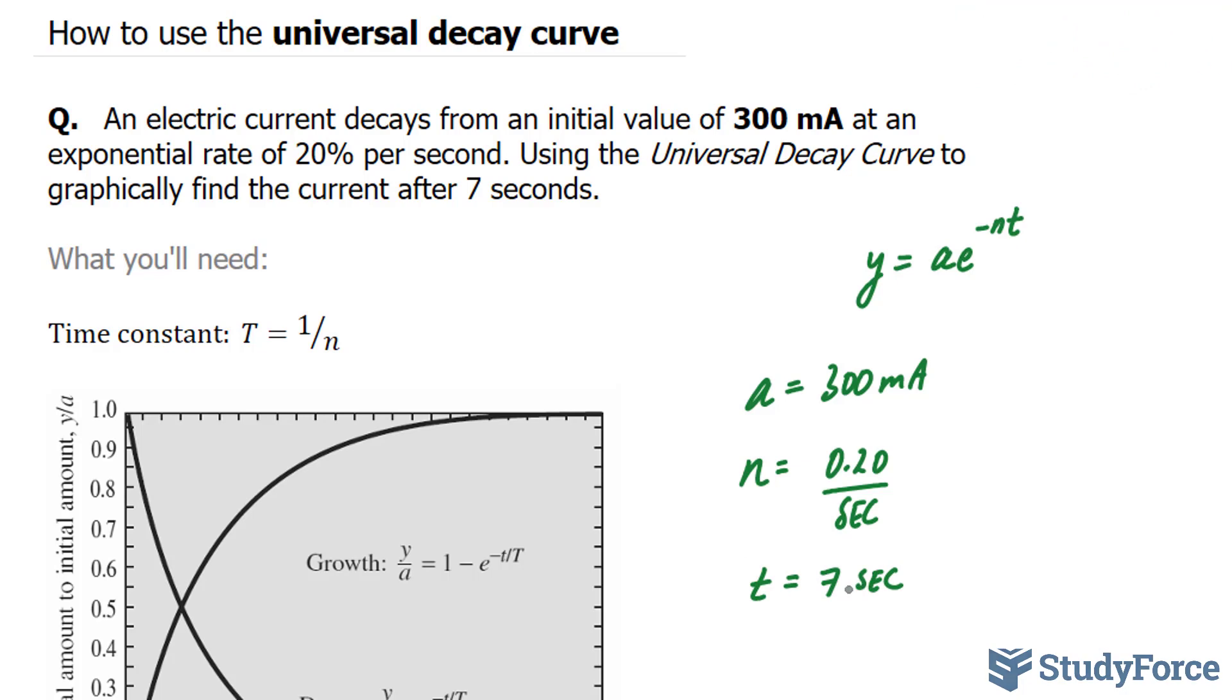The first thing that you have to do to use this Universal Decay Curve is you need to calculate the time constant. And that will be represented by the letter T, big T. And to do that, we take 1 over our rate, which is 0.2.